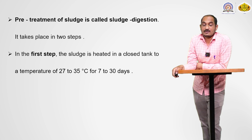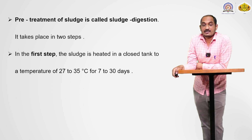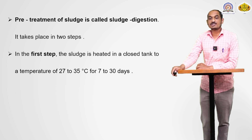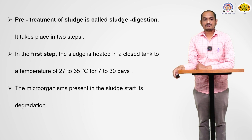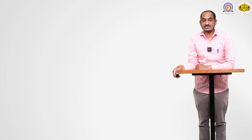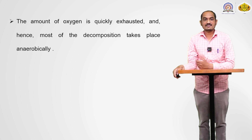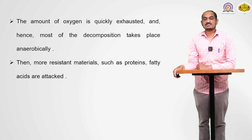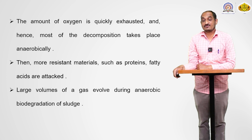The pre-treatment of sludge is called the sludge digestion technique, which takes place in two steps. In the first step, the sludge is heated in a closed tank to a temperature of about 27 to 35°C for 7 to 30 days. The microorganisms present in the sludge start its degradation, oxygen is quickly exhausted, and most of the decomposition takes place anaerobically. More resistant materials such as proteins and fatty acids are attacked, and a large volume of gases evolves during anaerobic biodegradation — these are known as sludge gases.